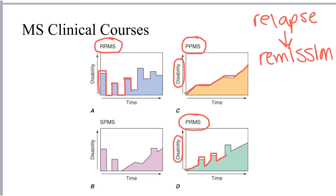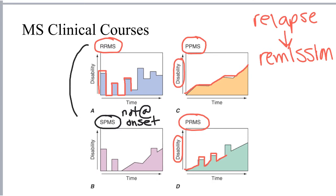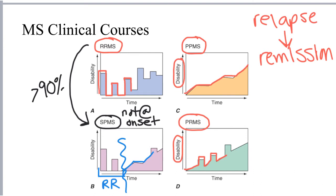There is another clinical course called secondary progressive MS, or SPMS. Patients may not be diagnosed with SPMS at initial presentation; however, a large majority of individuals with relapsing-remitting multiple sclerosis will eventually progress to secondary progressive, where the disease becomes more steadily progressive with continued worsening disability. About 90% of patients with relapsing-remitting MS will progress to secondary progressive within 10 to 20 years of diagnosis.